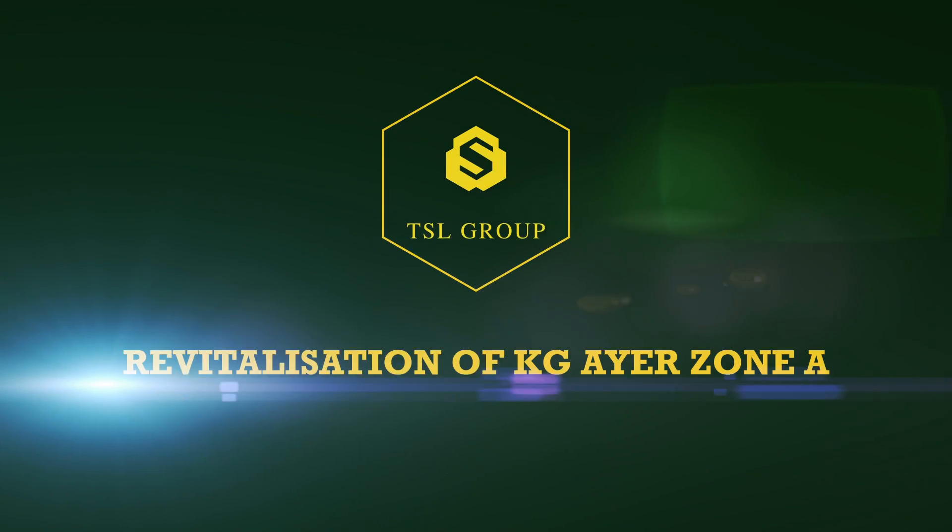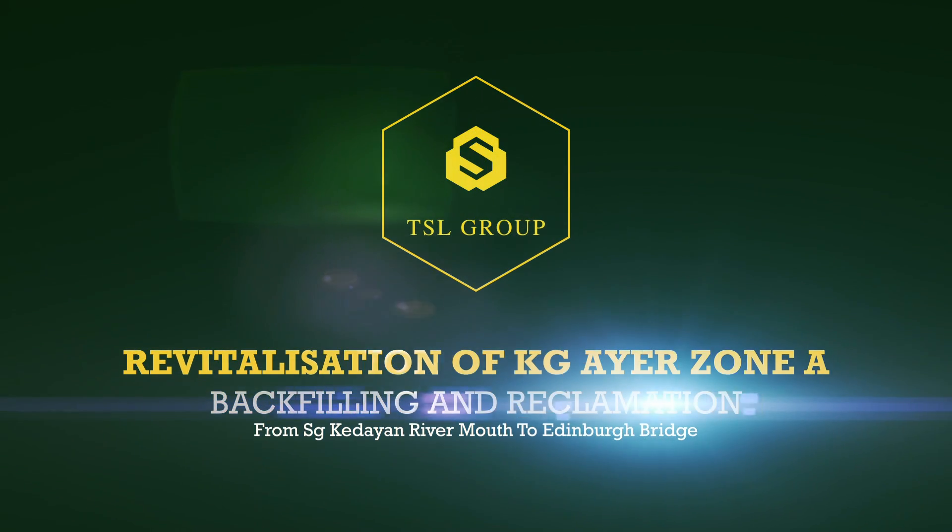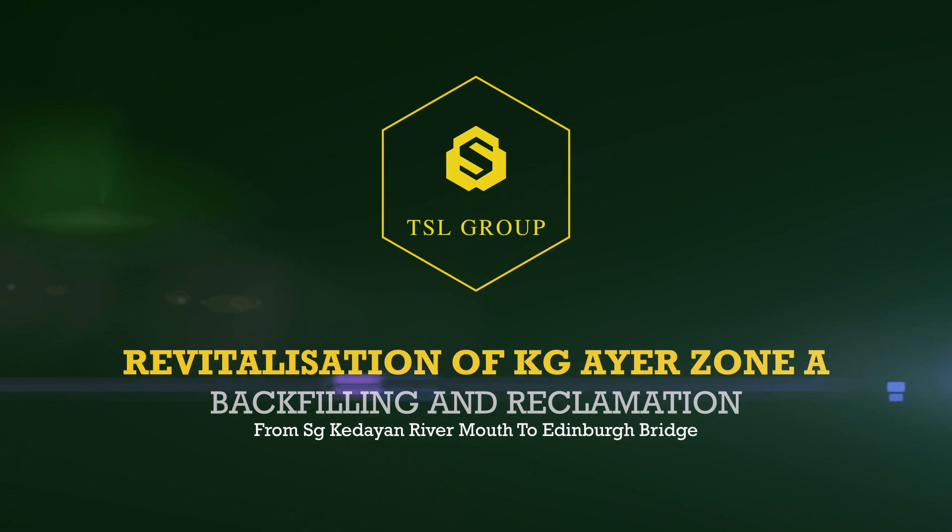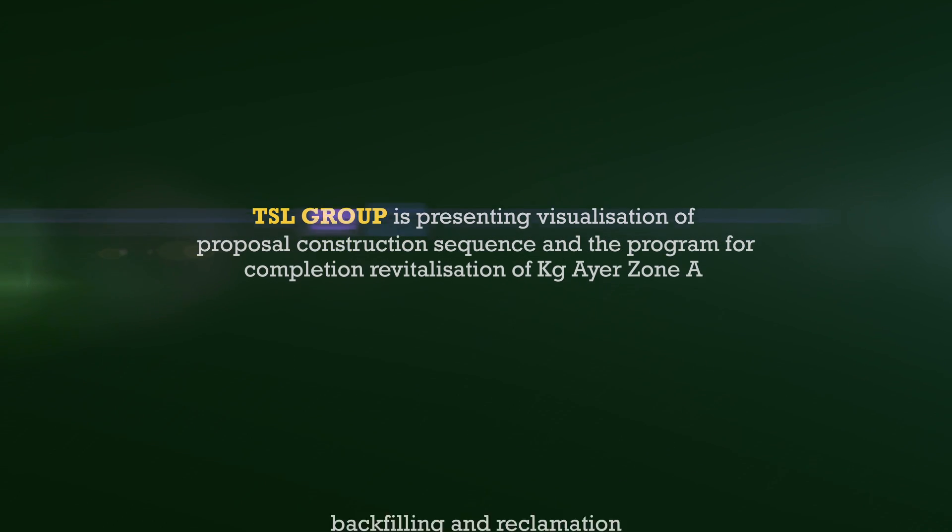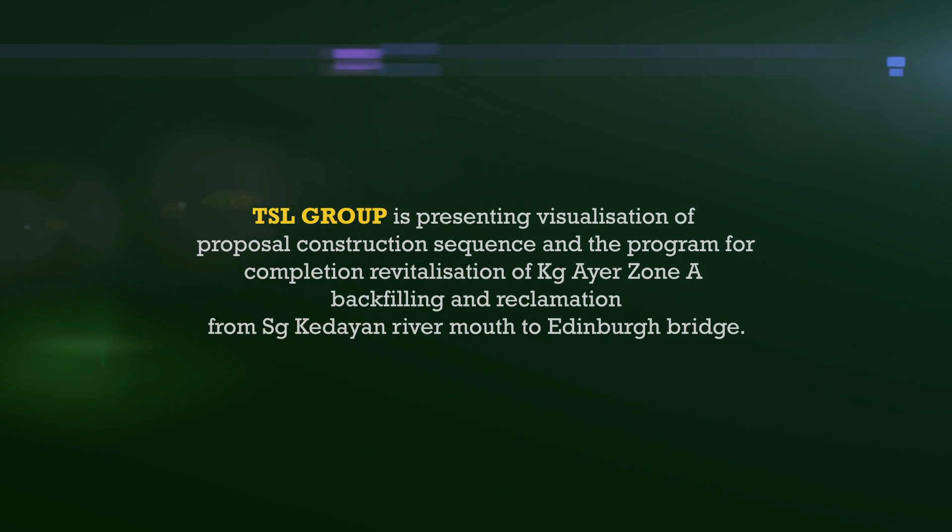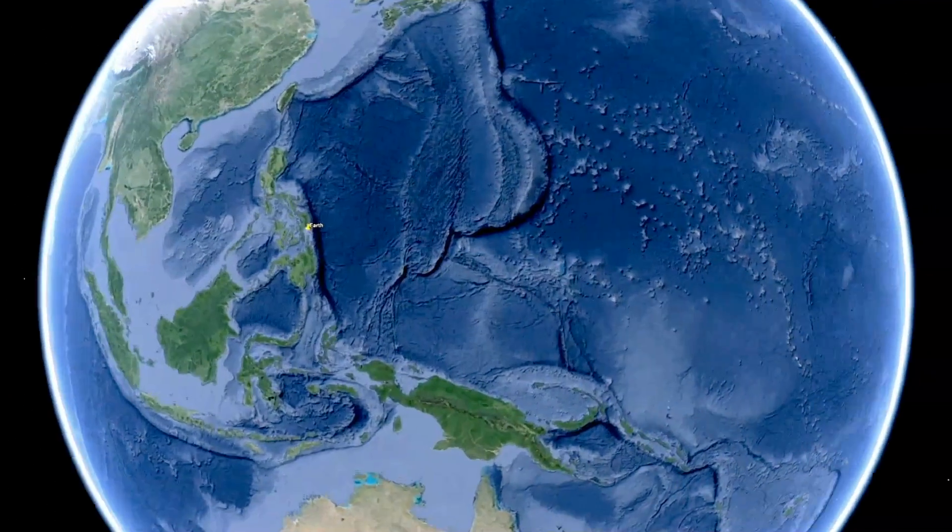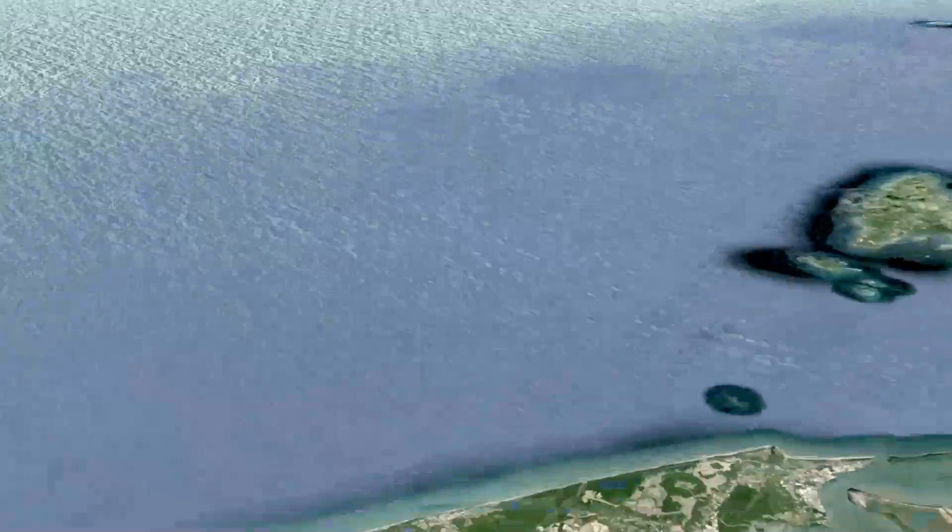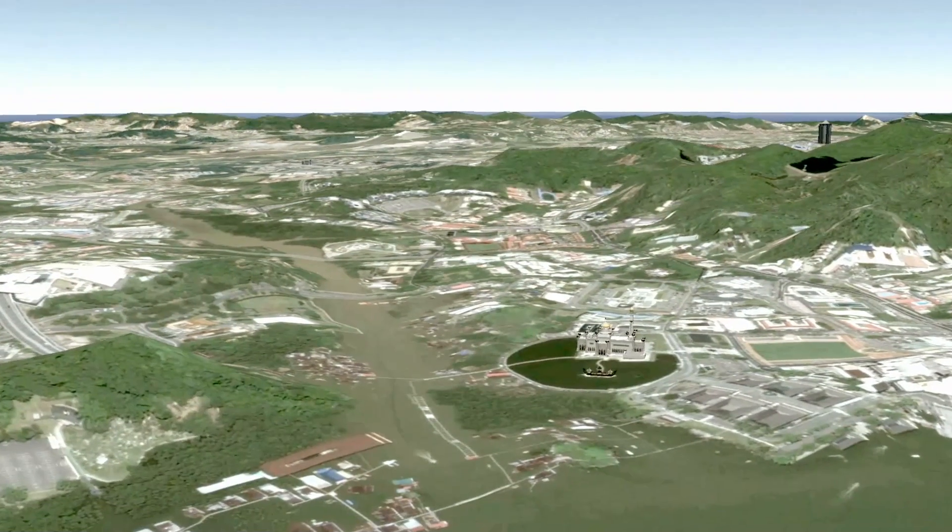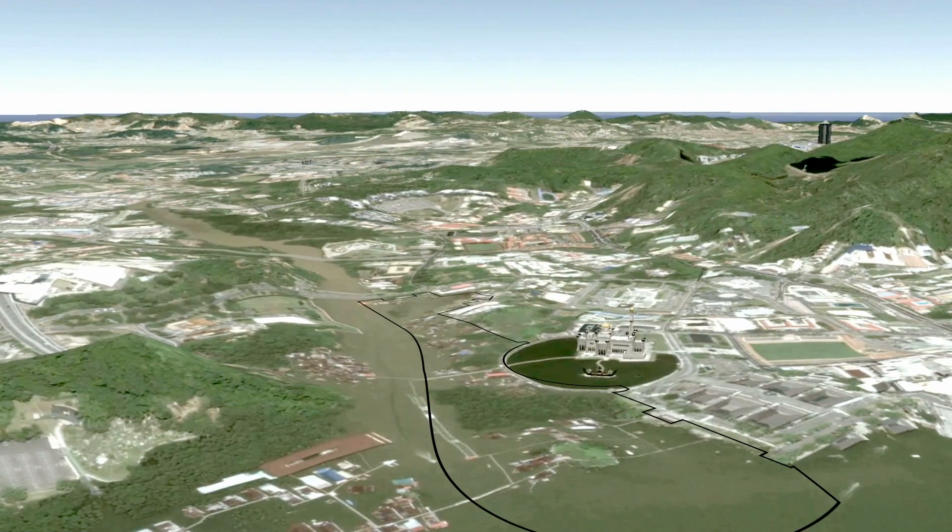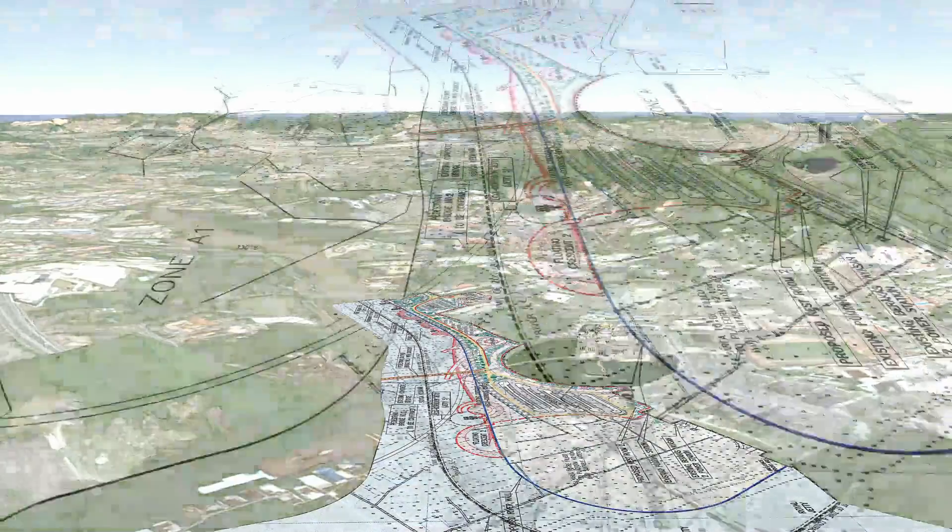Revitalization of Kampung Air Zone A, backfilling and embankment from Kuala Sungai Kedayan to Edinburgh Bridge. This visual aid provides a general view of the proposed method statement for the project. The project is located in Brunei Darussalam at the river mouth of Sungai Kedayan and stretches about 1.2 kilometers inwards.